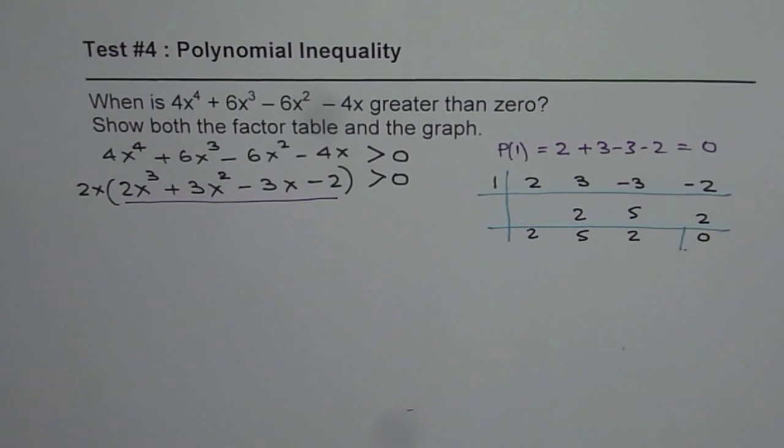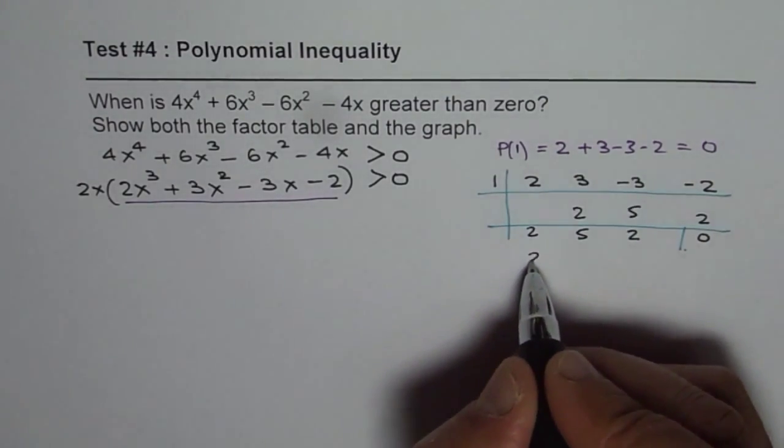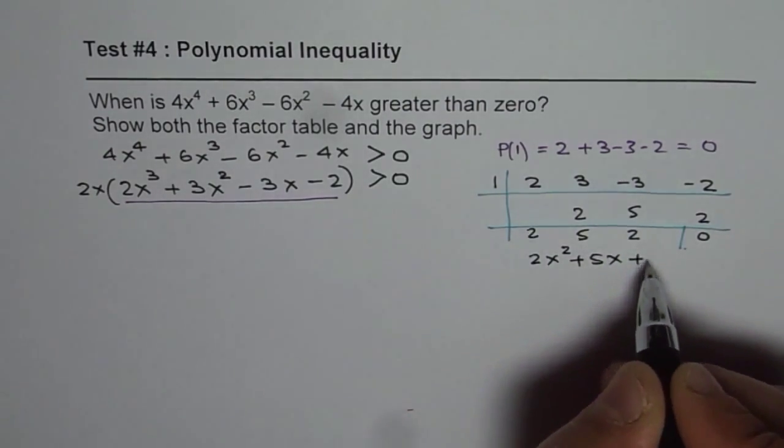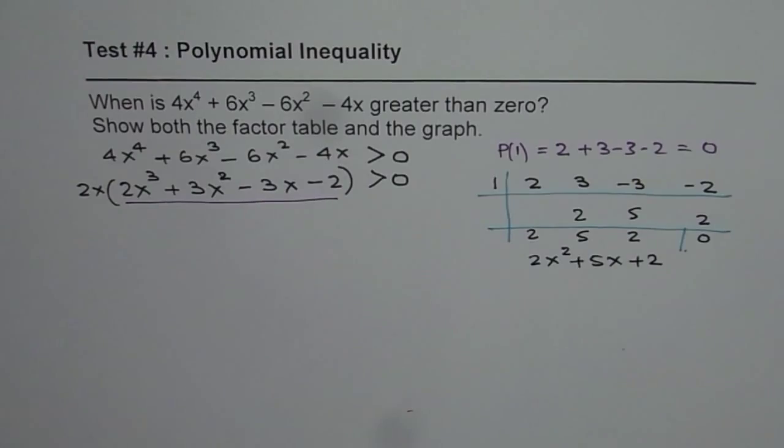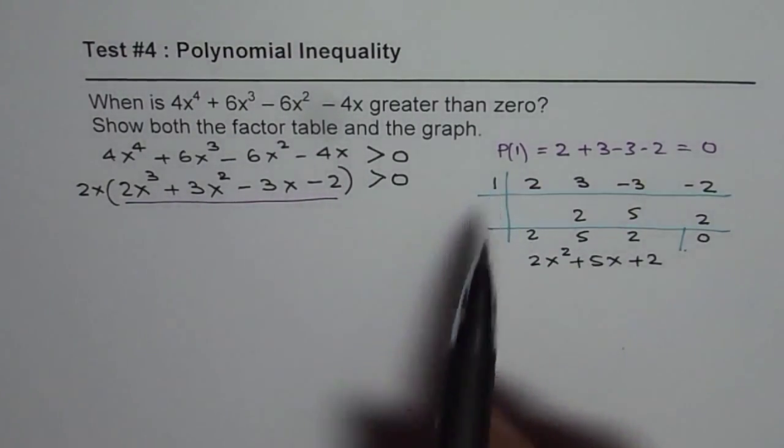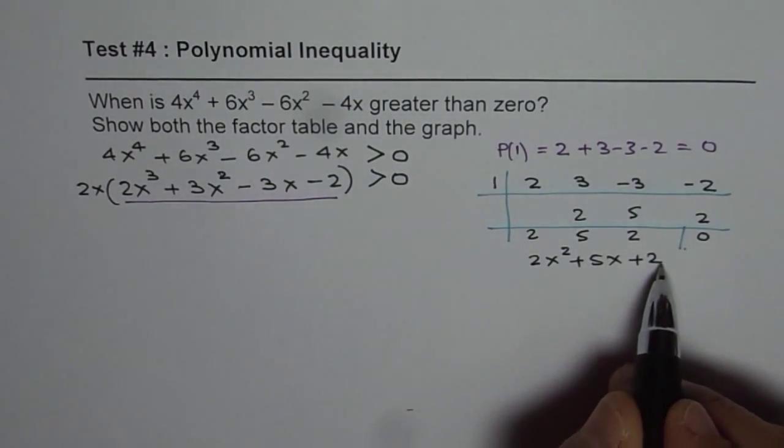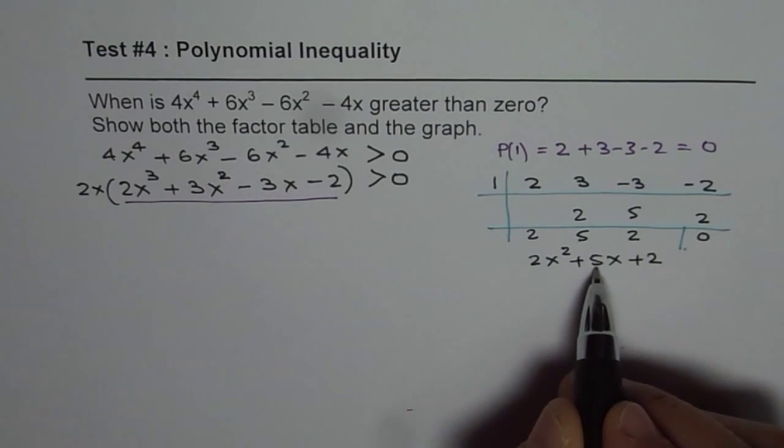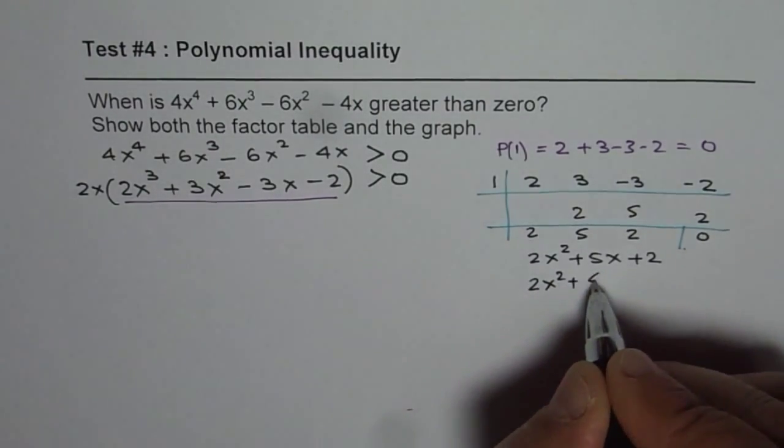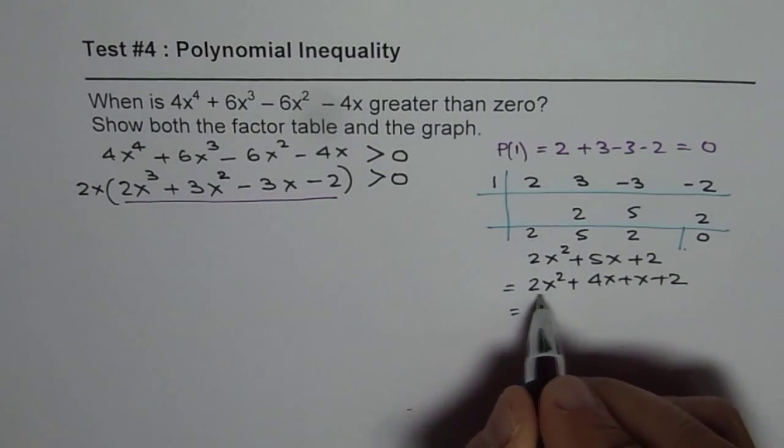So we get a 0 here and this is a quadratic equation which could be written as 2x square plus 5x plus 2. So we get this quadratic equation after factoring which can be factored. Here 2 times 2 is 4 and we need a sum of 5 so we can write 5 as 4 plus 1. So let's write down this as 2x square plus 4x plus x plus 2.